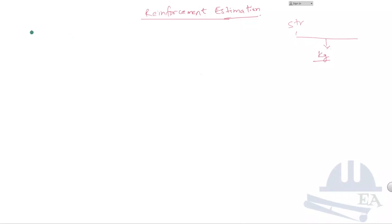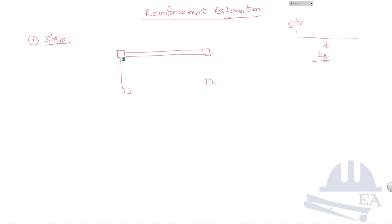The first topic we will cover is the reinforcement in the slab. If you look at the structural drawing of any slab, you will see that if this is my slab panel, these four will be my columns. Between the columns, you will see the beams. So this will be my one slab panel, and in the same way you will have slab panels in other directions as well.